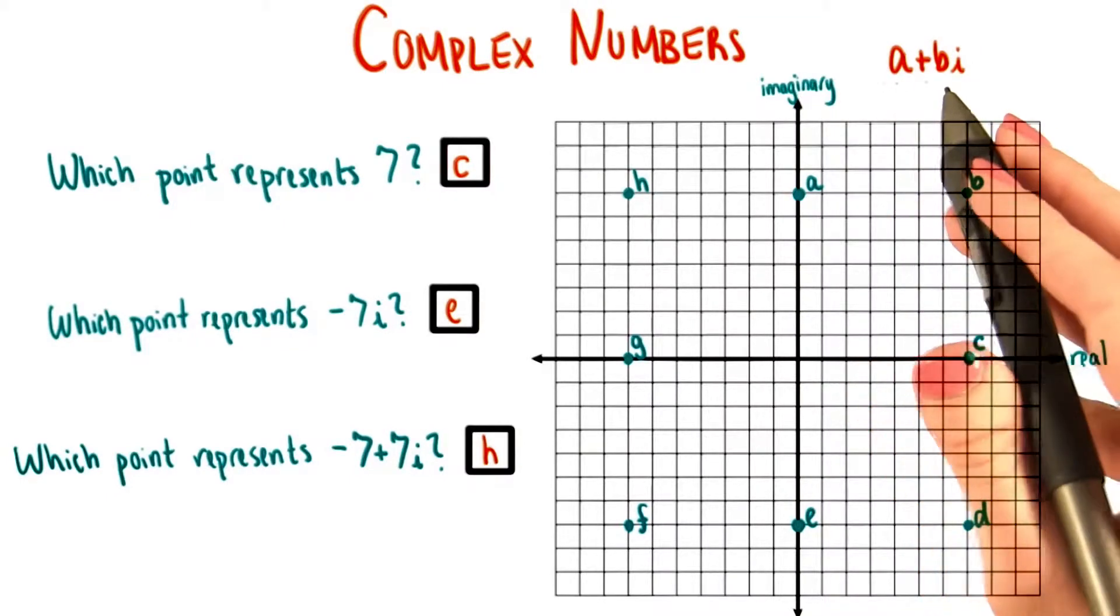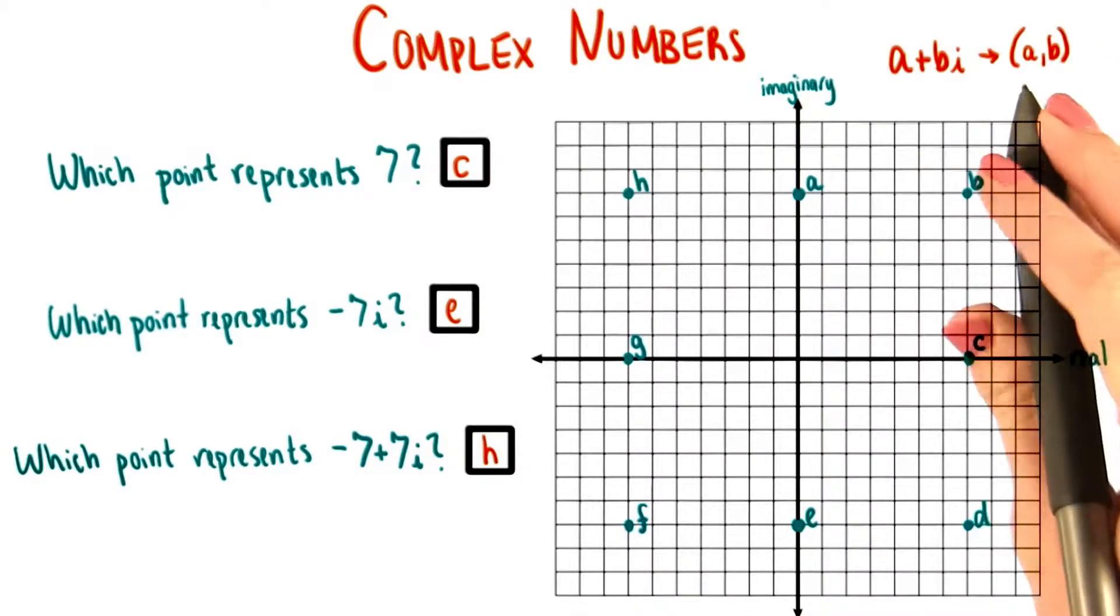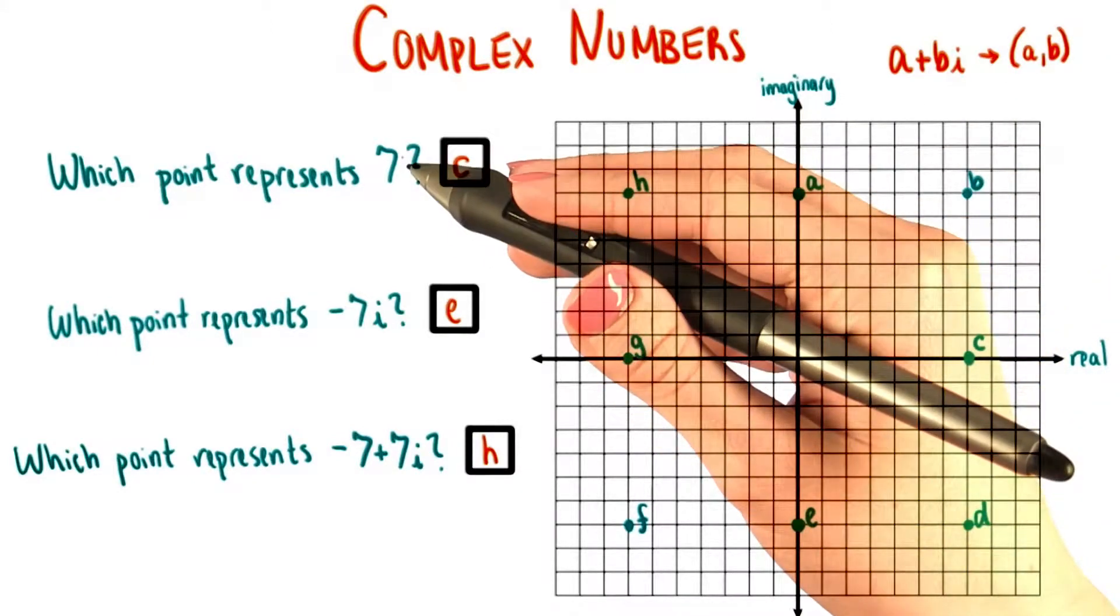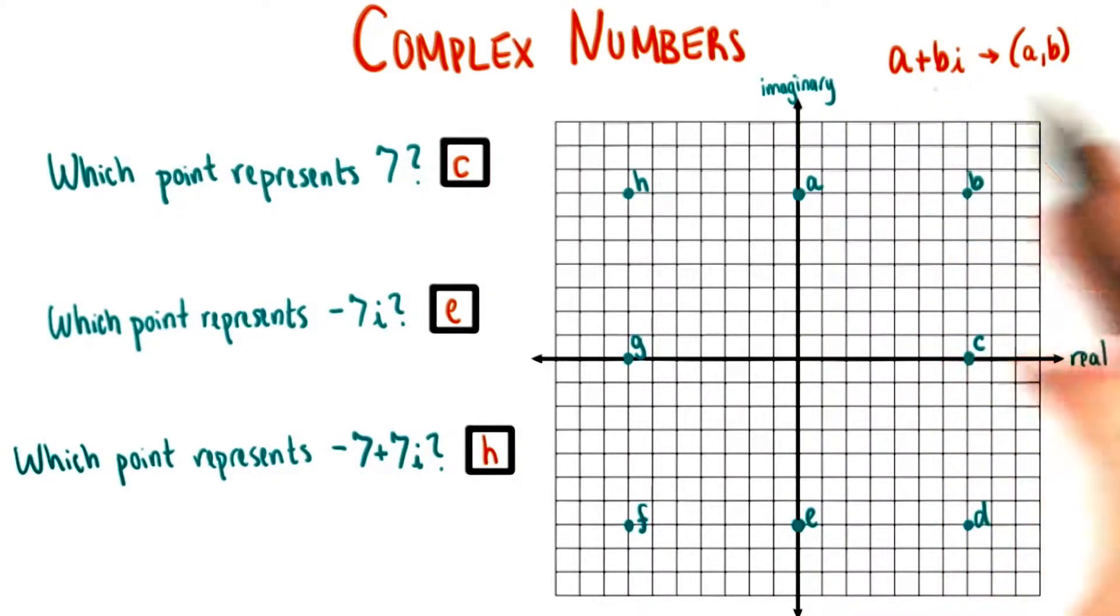Remember that the complex number a plus bi can be graphed on this coordinate plane as the point a comma b. So we need to figure out how each of these points is written in this form, or what a and b are each equal to.